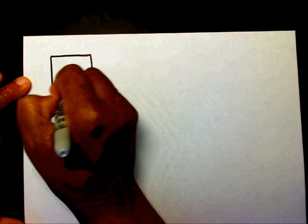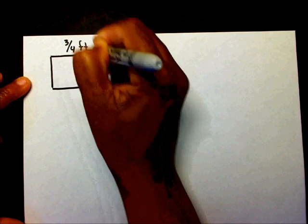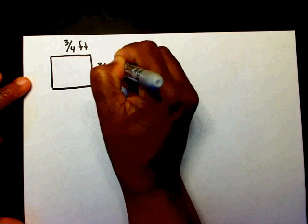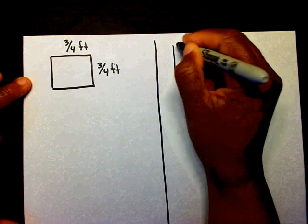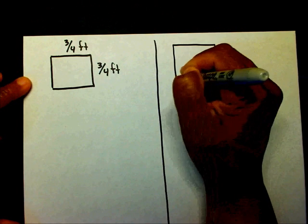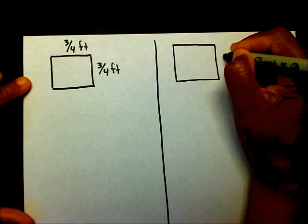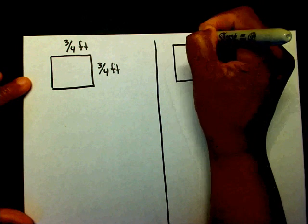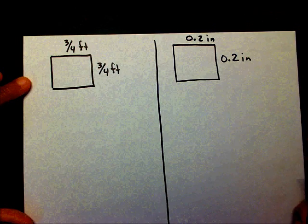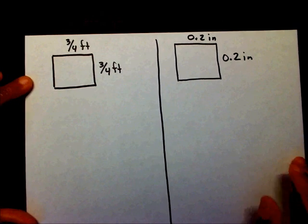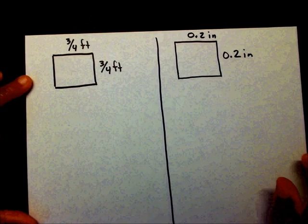Now let me give you one to work on your own. I'm going to give you two problems — I want you to find the perimeter of this square, and I want you to find the perimeter of this square. We'll work on some fractions and decimals. Please pause the video and find the perimeter.